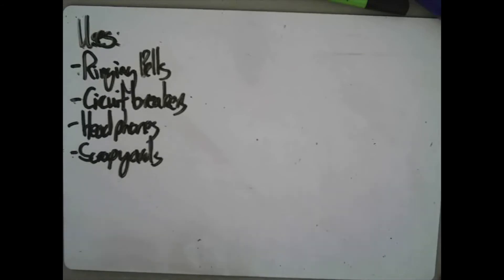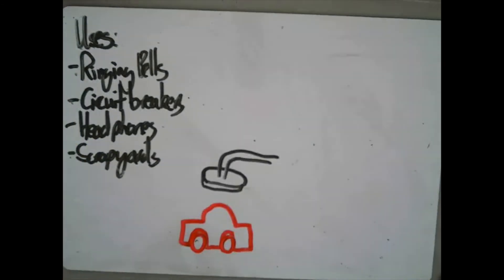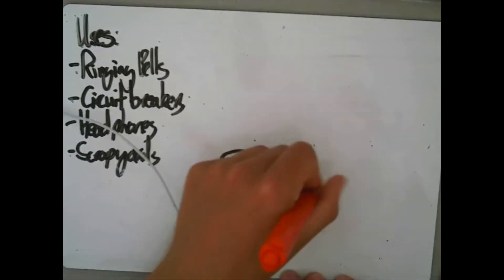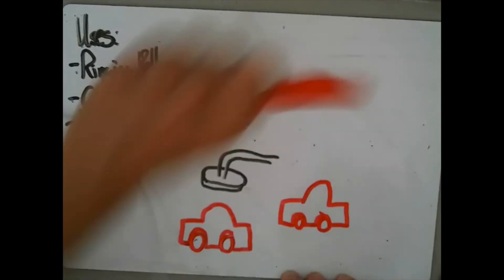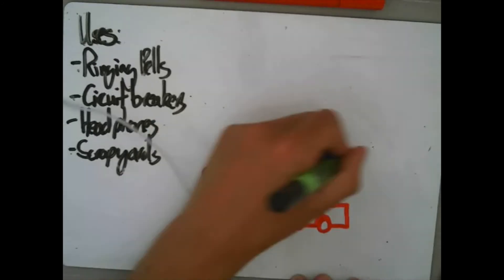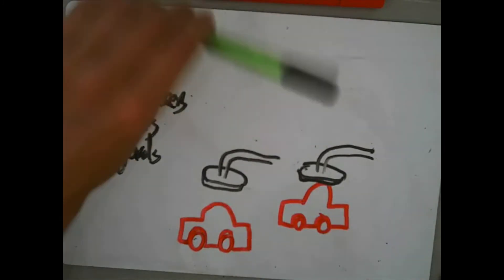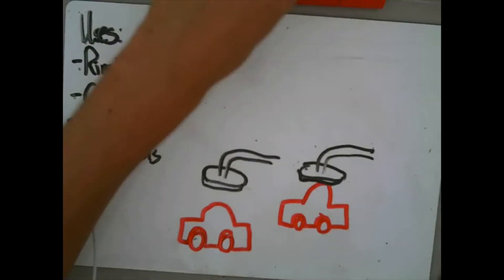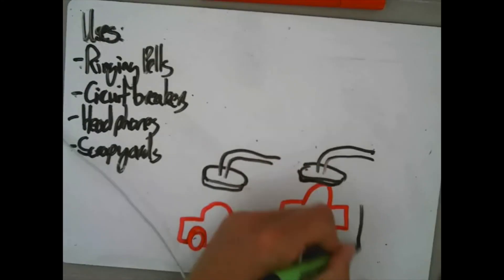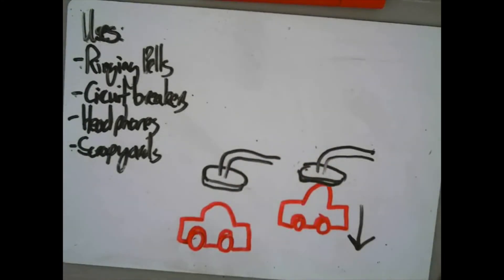In a scrapyard, you often need to move a car from one place to another. Cars are made of magnetic materials, so this is an easy way to transport them. Here we've got our car and our electromagnet. The electromagnet is positioned above the car and switched on to pick it up. Once the car is in the desired position, you turn the electromagnet off and the car falls to the floor. The strength can also be changed by breaking the circuit that produces the magnetic field.